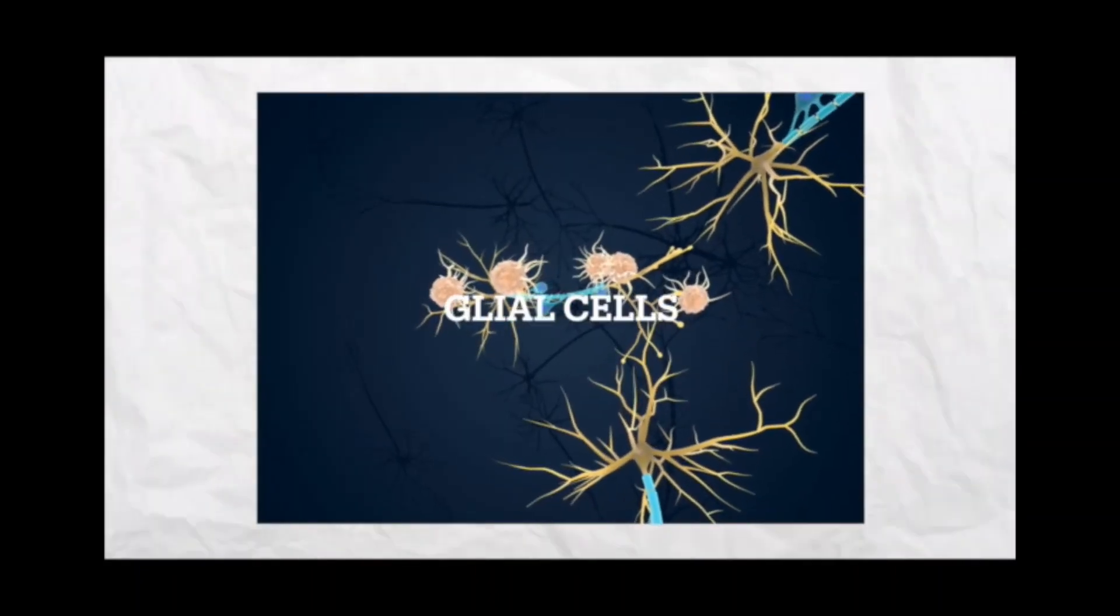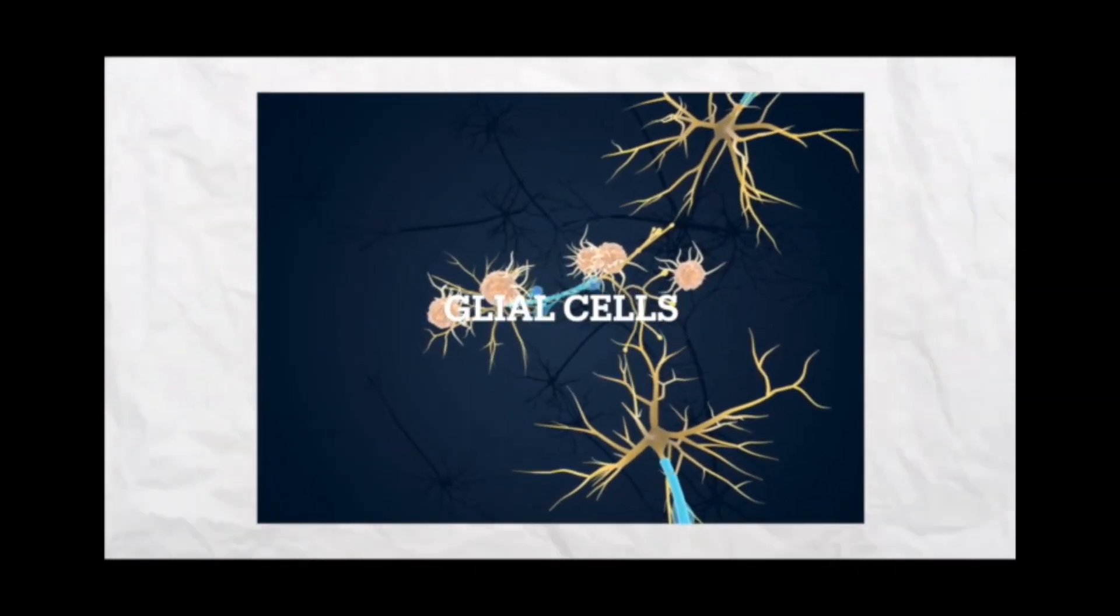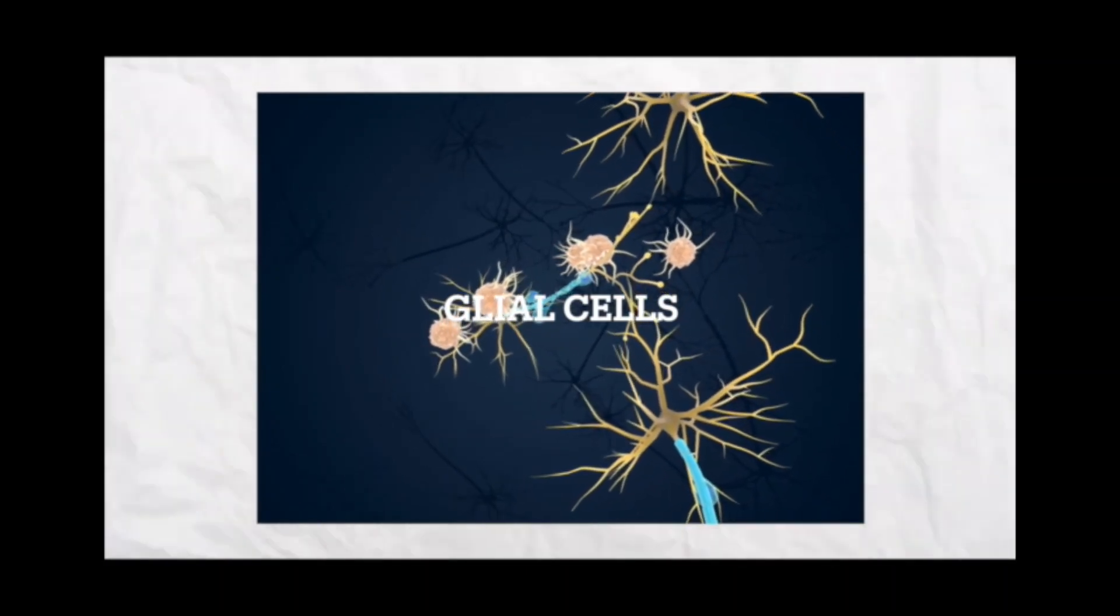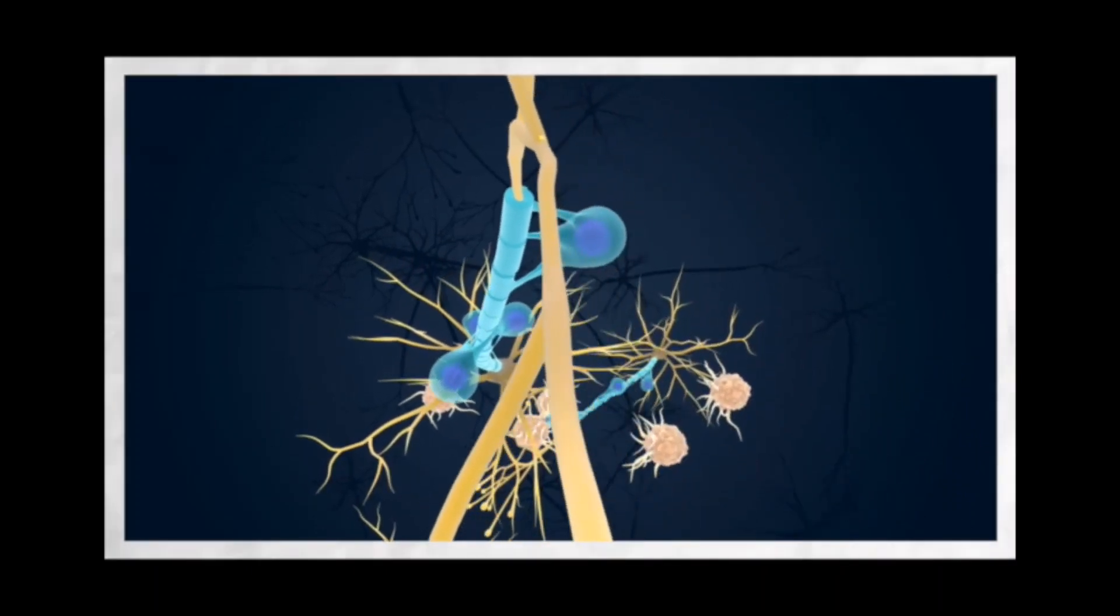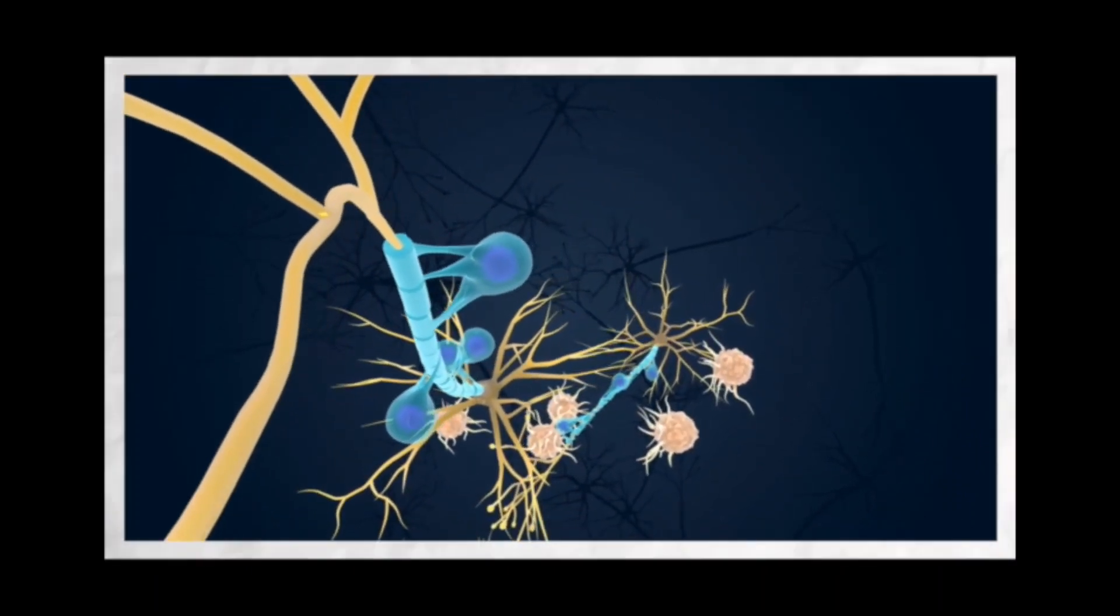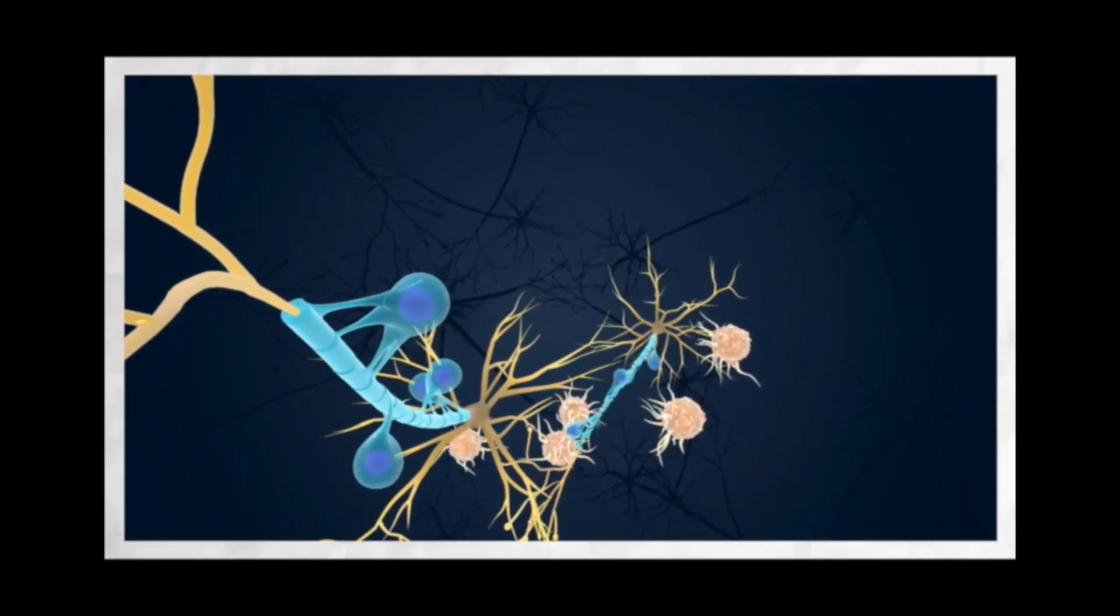You see, glial cells help support, connect, and protect the neurons in the brain, and are sometimes referred to as the glue of the nervous system. There are several types of glial cells that all play a part in the so-called brainwashing.